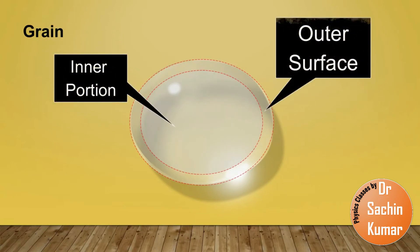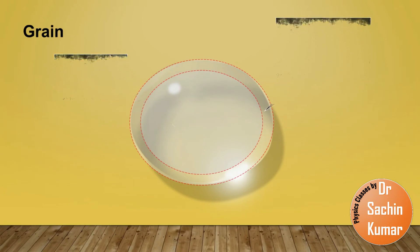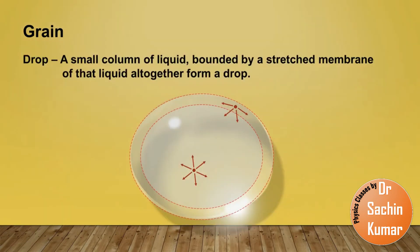The difference between them is that the part of a drop in the inner part is interacting equally in all directions, but the part of the drop situated near the surface is interacting towards one side. So as a result, the surface of water acts like a stretched membrane. How would you define a drop then? A drop is a small column of liquid bounded by a stretched membrane of that liquid. Altogether they form a drop.